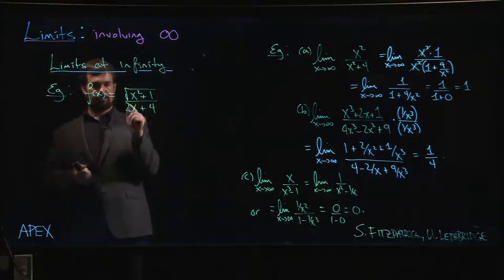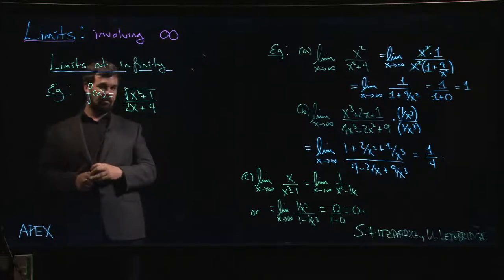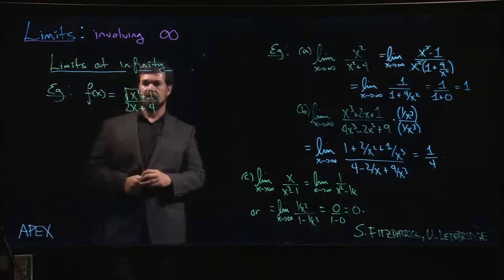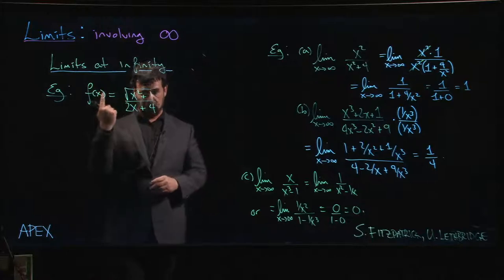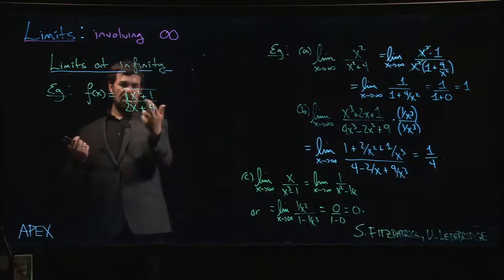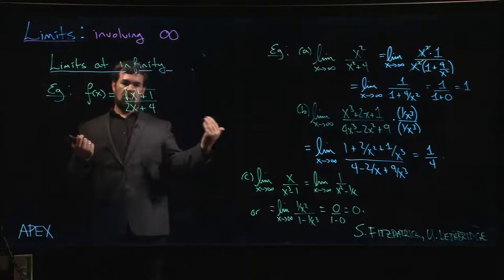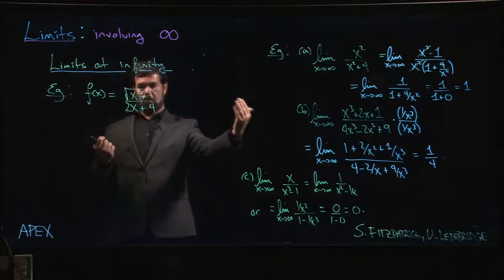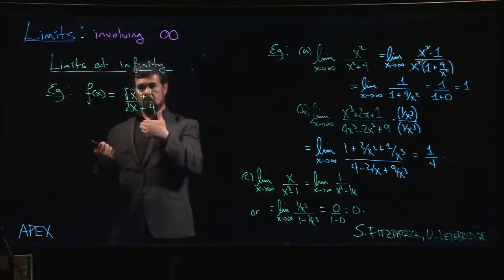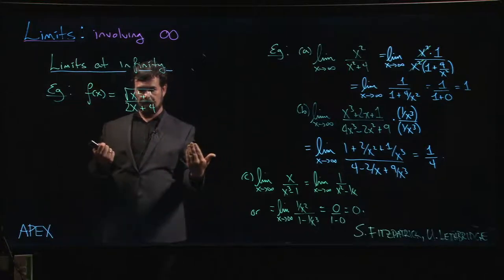But look what's going on over here - that's a square root in the numerator. Square roots are always positive, right? The square root function is a positive function. It's never negative unless you put a minus sign out front. The denominator on the other hand is a linear function - x can be either positive or negative here. There is going to be a point at which that denominator becomes negative.